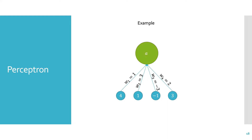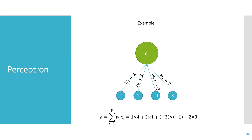Let's run through an example to get the idea. We start with the feature vector 4, 1, -1, 3, and the associated weights 1, 3, -3, and 2. We calculate the activation as a weighted sum: 1×4 + 3×1 + (-3)×(-1) + 2×3, which adds up to 16. Since 16 is greater than 0, we output positive. This sample has been predicted to be a member of the positive class.